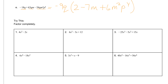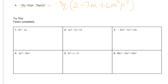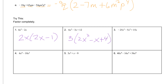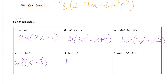Next I would like you to do some on your own, so go ahead and pause it and try the 6 below. Unpause it when you're ready to check your answer. Number 1 should be 2x times (2x minus 1). Number 2 should be 3 times (2x squared minus x plus 4). Number 3: negative 5x times (5x squared plus x minus 3). Number 4: 6x squared times (x squared minus 3). Number 5 is not factorable — there are no greatest common factors to take out.